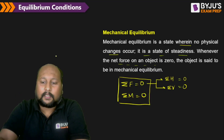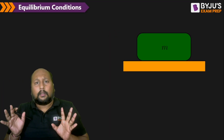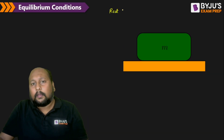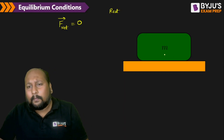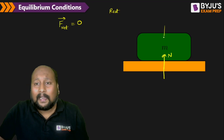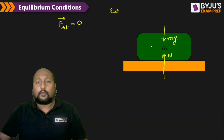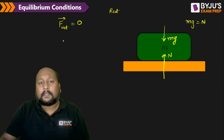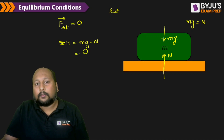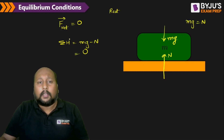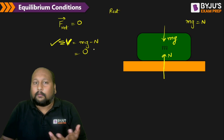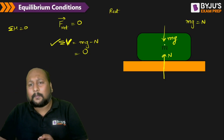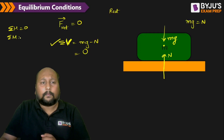Consider a mass m at rest. Can we say the total force acting on it is zero? Let us draw the free body diagram: there is a normal reaction N acting upward from the ground and weight mg acting downward. So mg equals N, meaning the total vertical force mg minus N equals zero. There is no horizontal force, so that is automatically zero. All forces pass through the same center of gravity, so the moment is also zero.